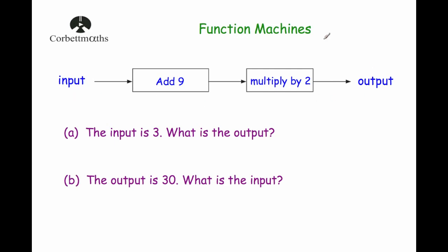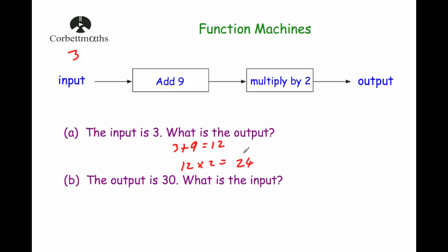Here we've got a function machine. It says: input, then add 9, multiply by 2, then you get your output. Part A: the input is 3, what is the output? To get the output, we first add 9 — so 3 plus 9 is 12 — and then multiply by 2, so 12 multiplied by 2 is 24. If the input is 3, the output is 24.